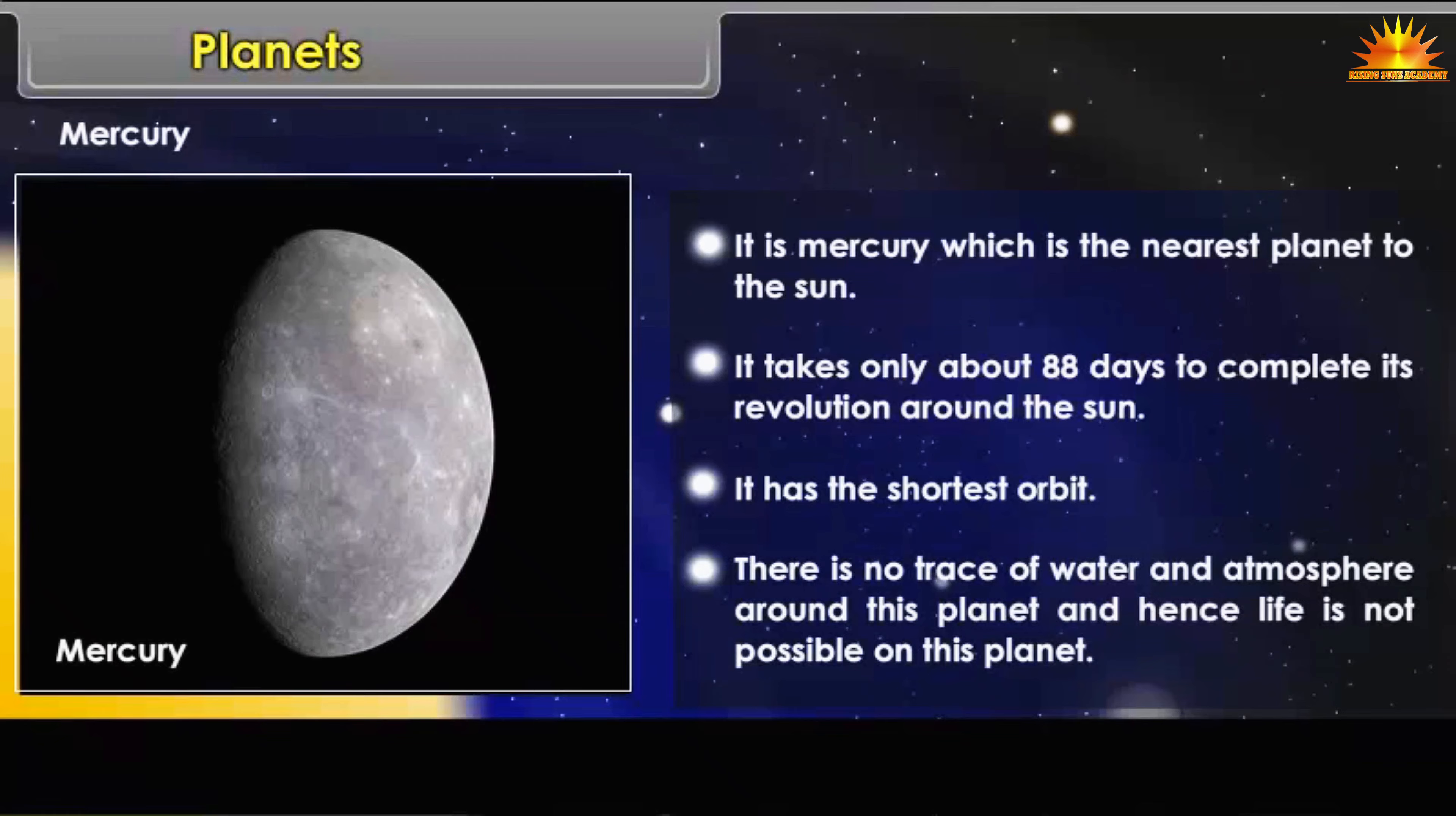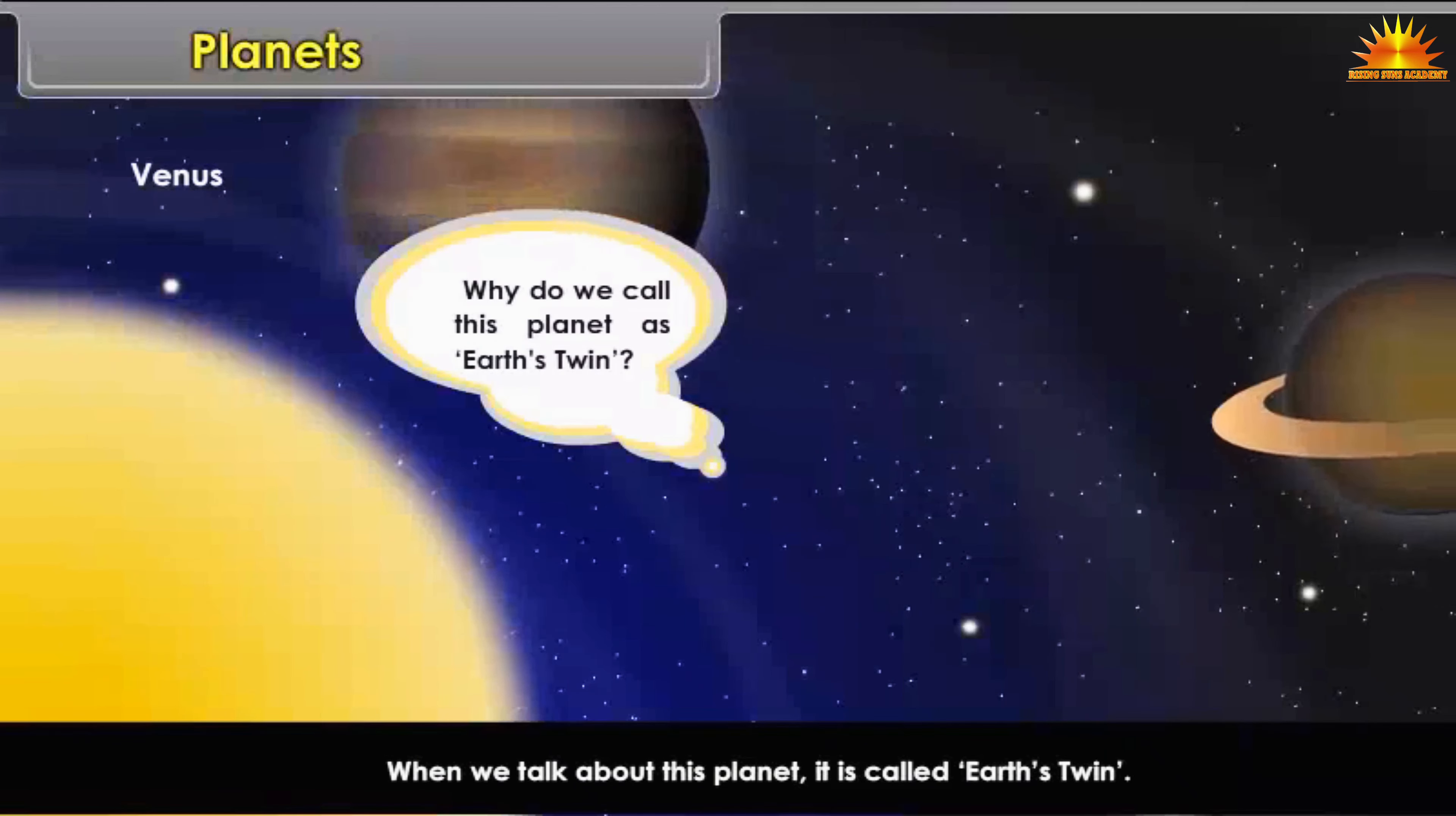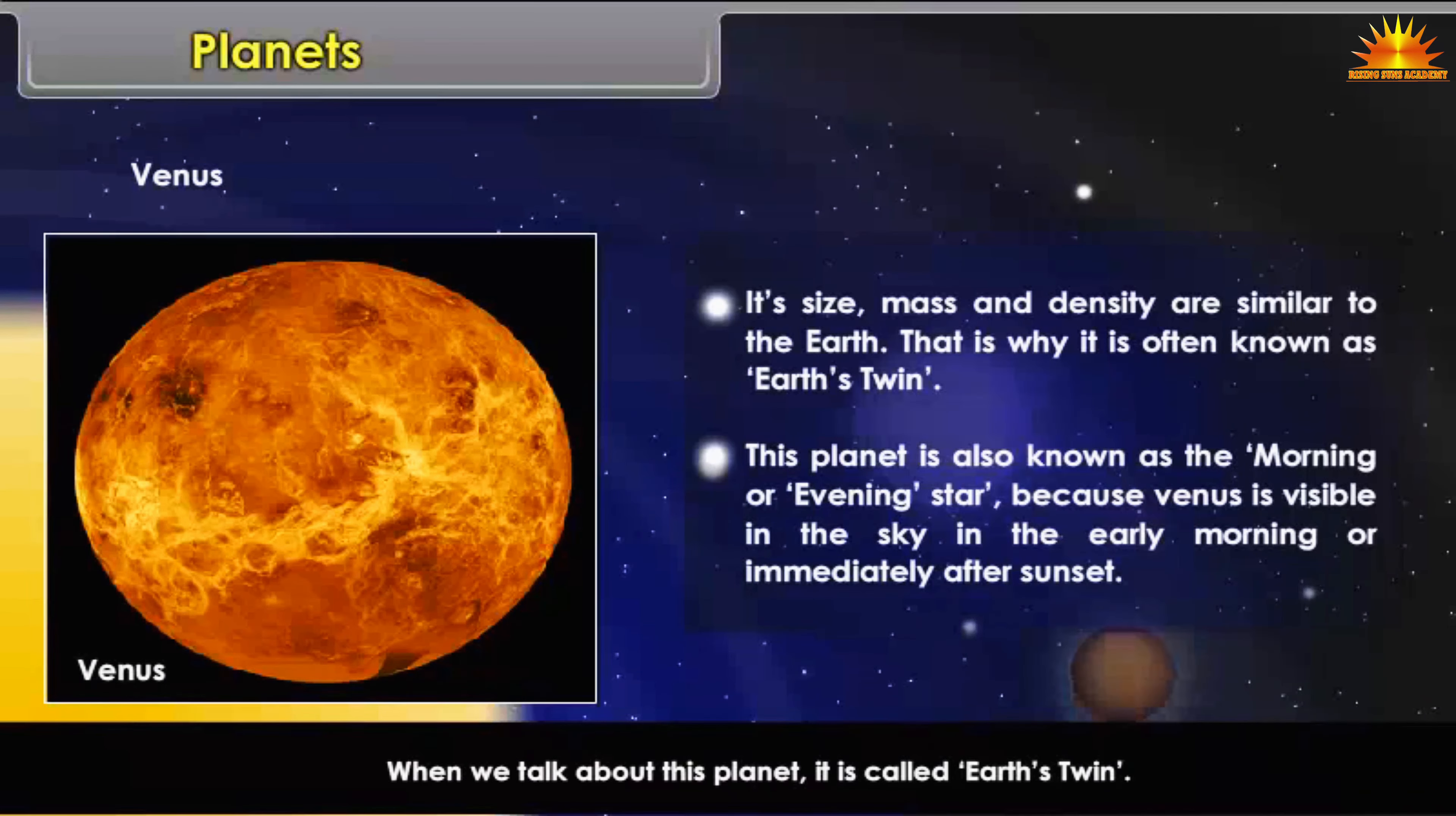Venus: When we talk about this planet, it is called Earth's twin. Why do we call this planet as Earth's twin? Its size, mass and density are similar to the Earth. That is why it is often known as Earth's twin.